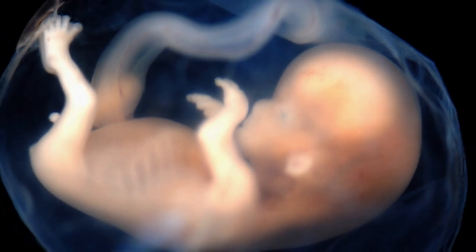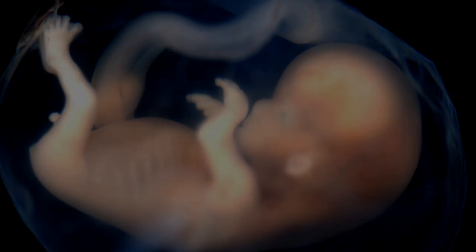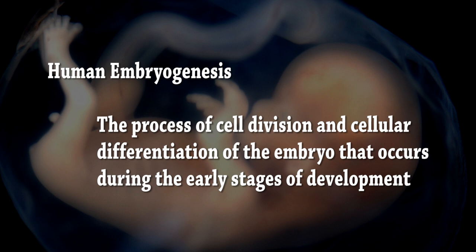Embryogenesis is a process of cell division and cellular differentiation of the embryo that occurs during the early stage of development. The development takes place from one cell — the zygote — to an infant baby.